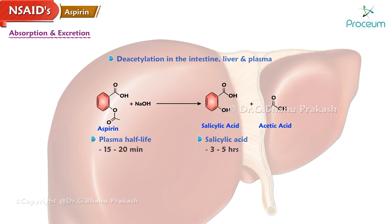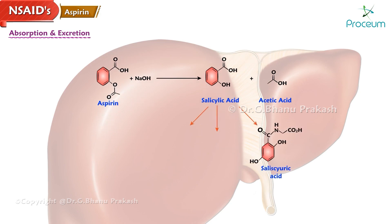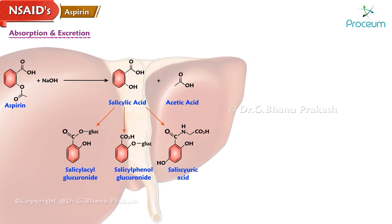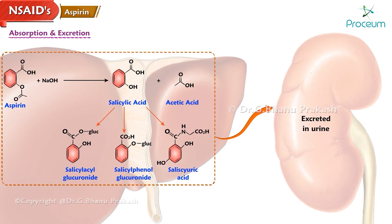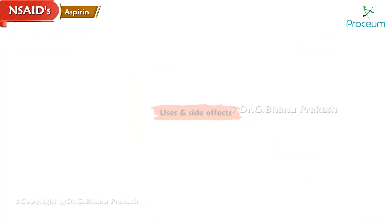Both aspirin and salicylic acid undergo conjugation in the liver with glycine majorly to form salicyluric acid, and also with glucuronic acid. The metabolites and free active forms are excreted in the urine, and alkalinization of urine increases aspirin excretion.